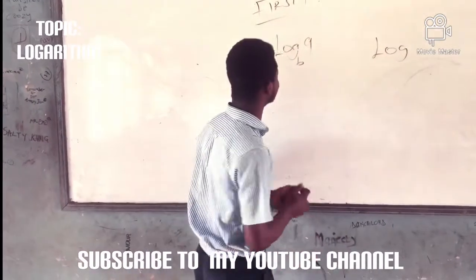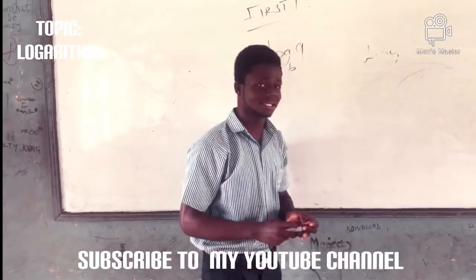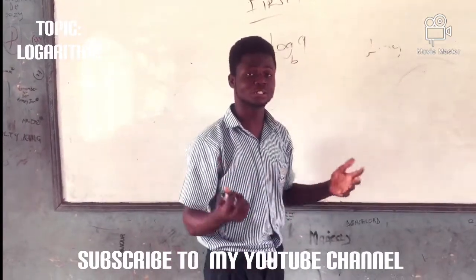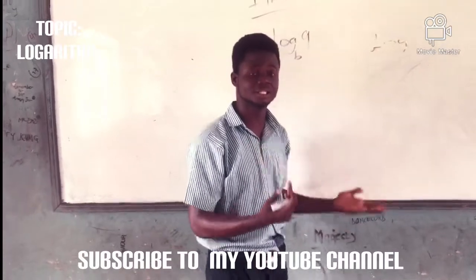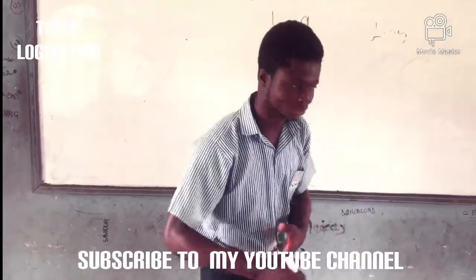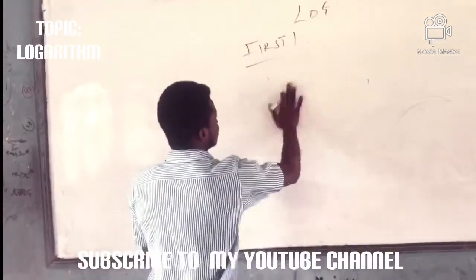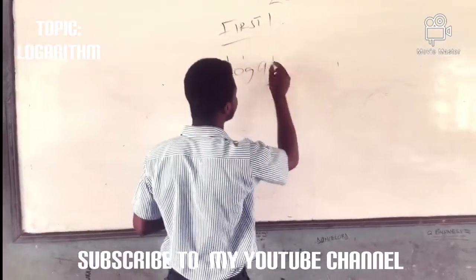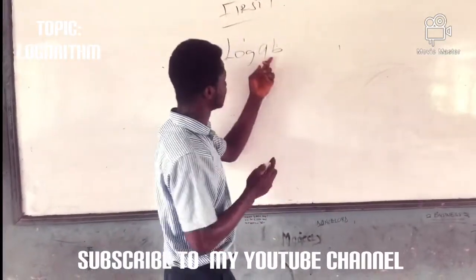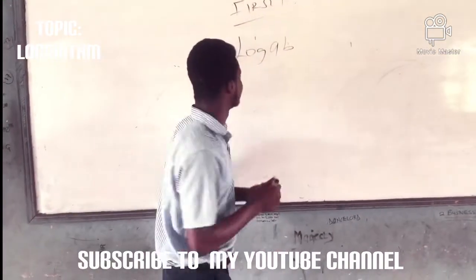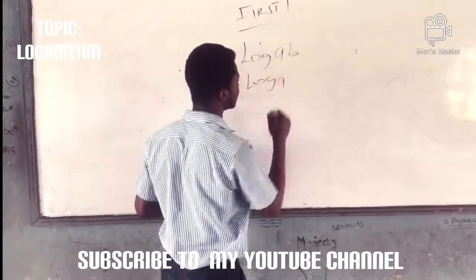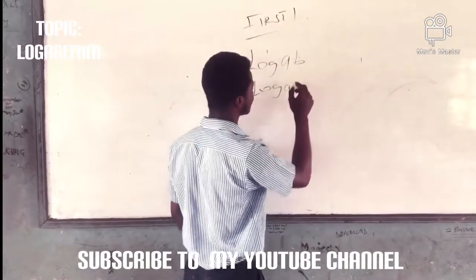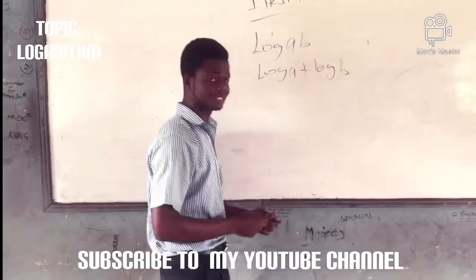The first property you have to know is the addition and multiplication relationship. In case you see addition, you reverse it to multiplication. In case you see division, you reverse it to subtraction. So log of A times B — since A and B are in multiplication, you reverse it and it becomes log A plus log B. This is the first property.